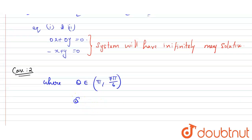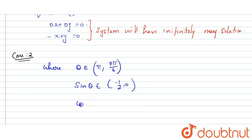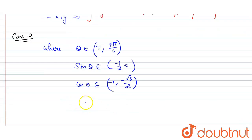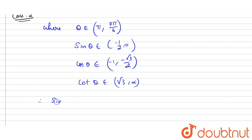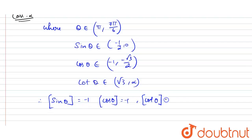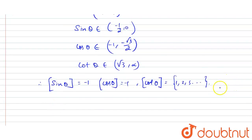For Case 2, I'm going to find sin θ. Sin θ belongs to (-1/2, 0), so ⌊sin θ⌋ = -1. Finding cot θ: cot θ belongs to integers, taking values 1, 2, 3, and so on.